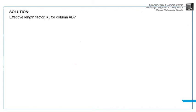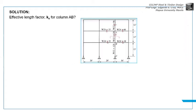Solution: The first thing we'll solve is the effective length factor Kx for column AB. Again, this is column AB. To get K for AB, we need GA and GB.